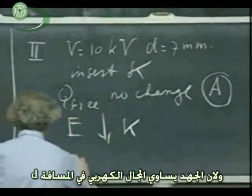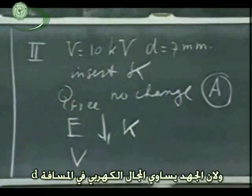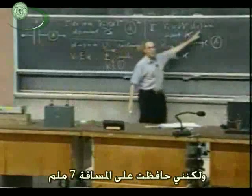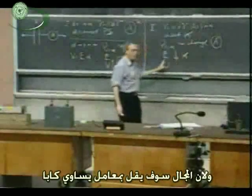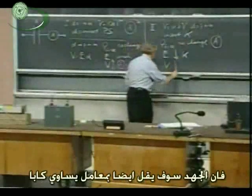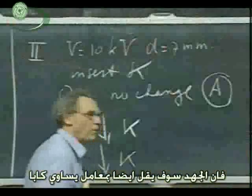And since the potential equals electric field times D, but I keep D at seven millimeters, I'm not going to change it. If E goes down by a factor kappa, then clearly the potential will also go down by a factor kappa.